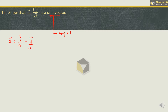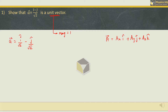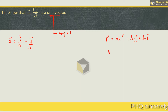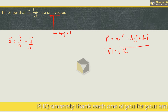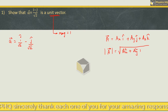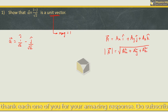Let us understand how to find the magnitude of a vector by this example. Vector A can be represented by its x component, its y component, and its z component. If you want to find the magnitude of vector A, the formula is √(x² + y² + z²).